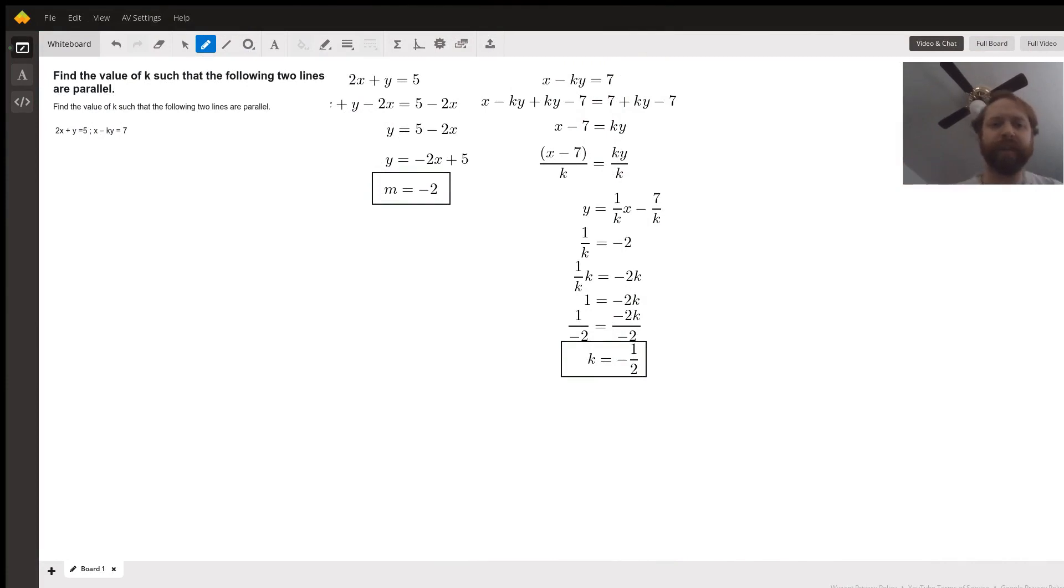This problem asks us to find a value for k that will make the lines given by these two equations parallel.